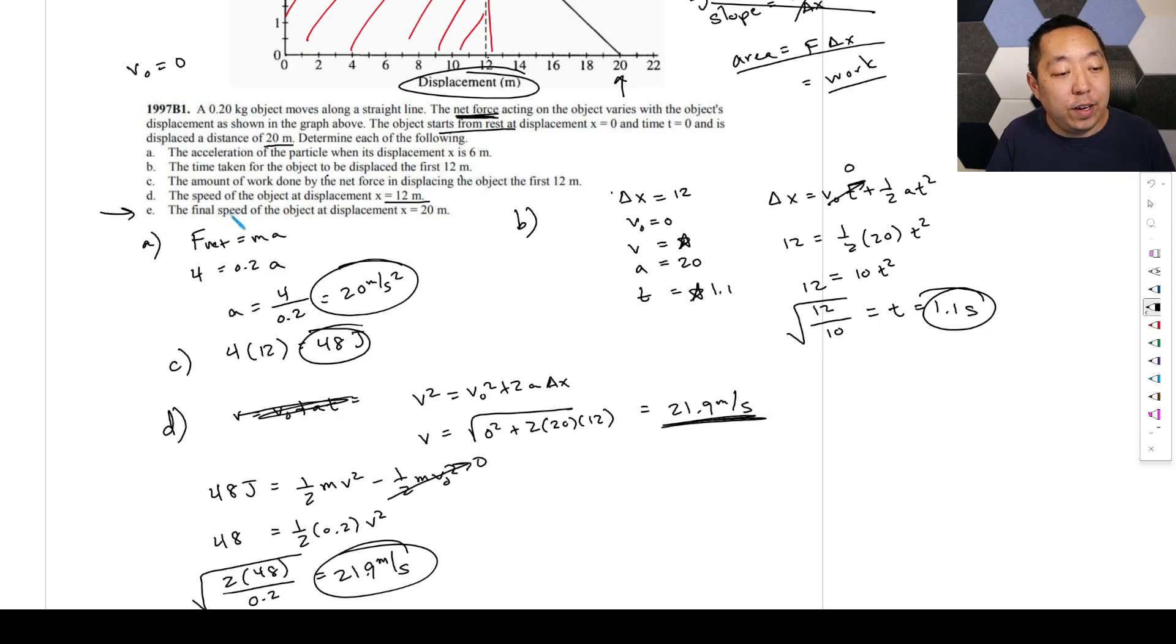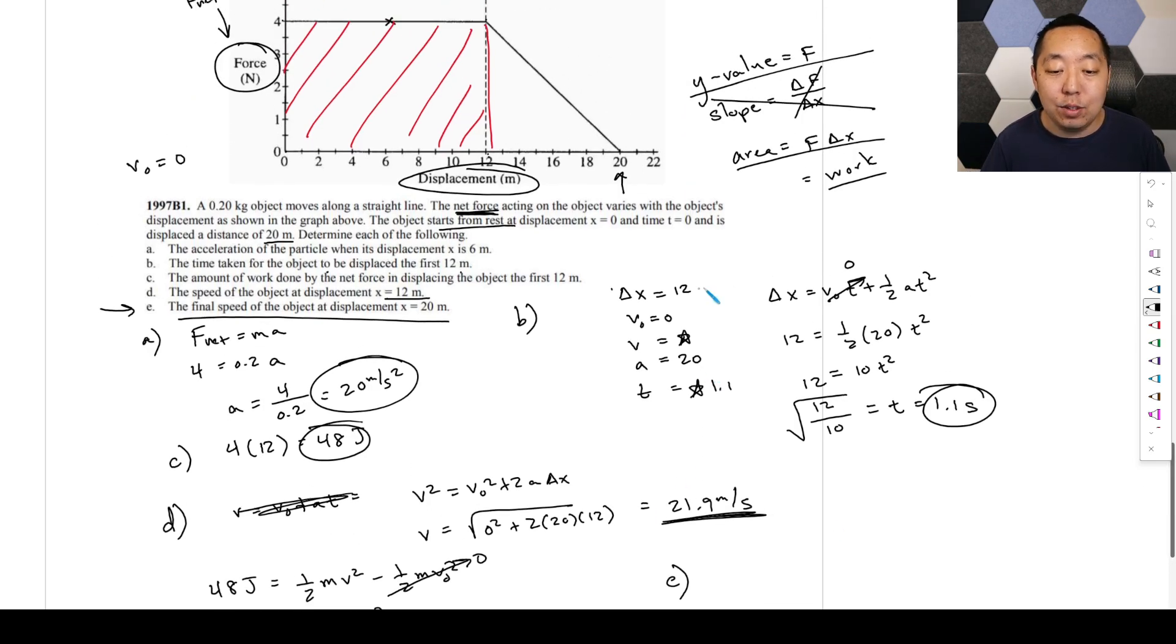Part e: find the final speed of the object when the displacement is 20 meters. Now I can't use the kinematic equation process for this part. Because now the acceleration varies. See, the y value is going to change, so the force is changing. So the acceleration varies. Remember, our kinematic equations only apply when the acceleration is constant. Acceleration is not constant, can't use those kinematic equations. Calculus, you can use calculus for it. For AP Physics 1, not allowed to use calculus.